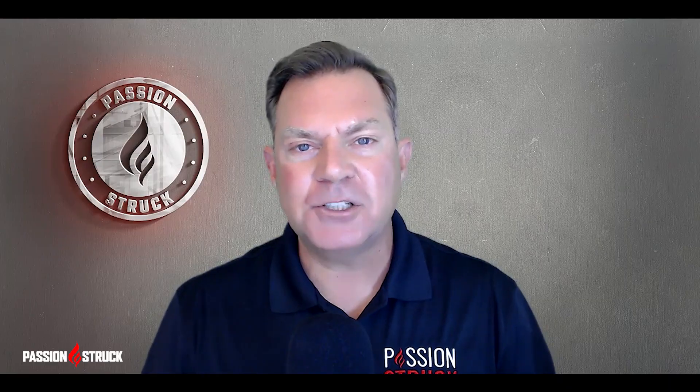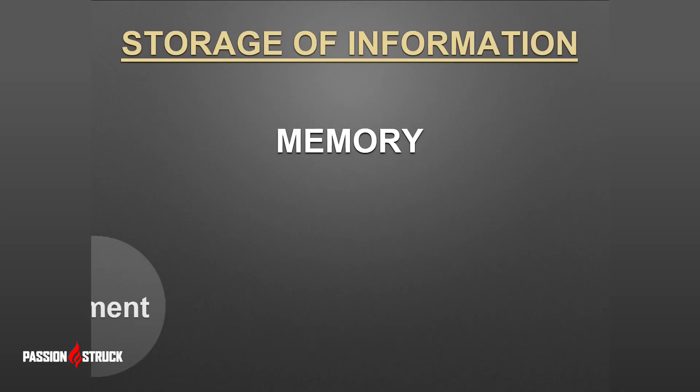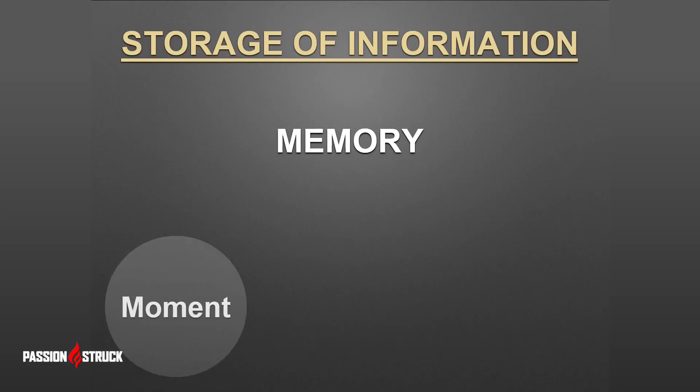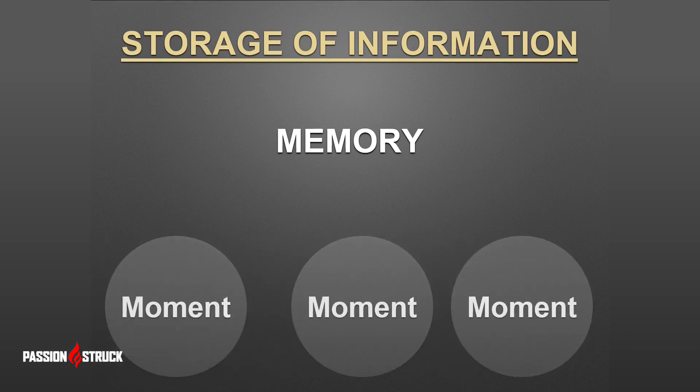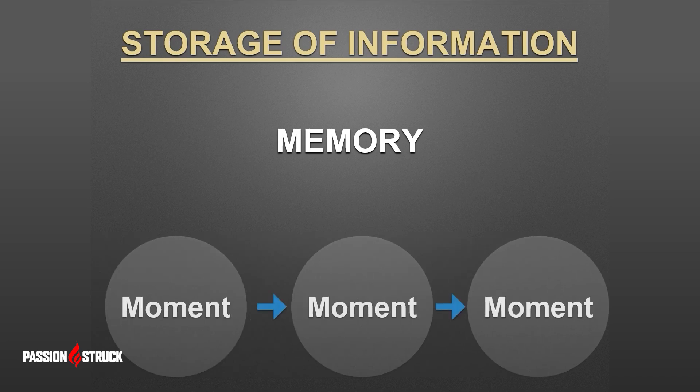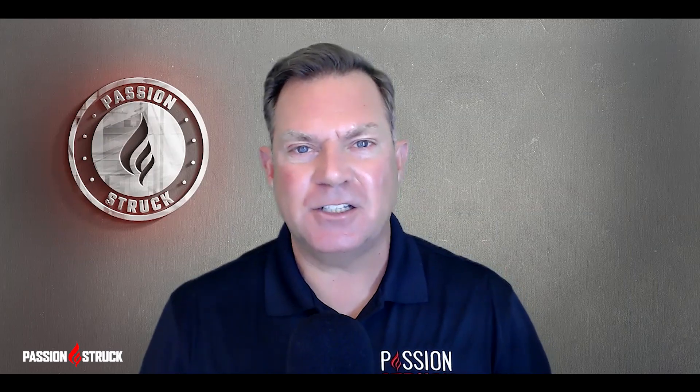But it's not enough just to let information in and process it. The information must also be stored. This brings us to the third aspect of learning, known as memory. Memory is the glue that holds reality together and links each moment to the next. Memory creates the existence of the uninterrupted feeling of time passing. There are two main types of memory, which I will now briefly discuss.